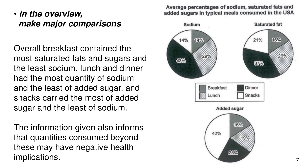In the overview, make major comparisons. Overall, breakfast contained the most saturated fats and sugars and the least sodium. Lunch and dinner had the most quantity of sodium and the least amount of sugar. Snacks carried the most amount of added sugar and the least sodium. The information also indicates that quantities consumed beyond these levels may have negative health implications.